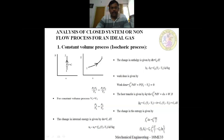At state point 1, we heat the gas and as a result the pressure increases. In the TS diagram, the temperature also increases from state point 1 to state point 2, whereas volume remains constant. We write P1V1/T1 = P2V2/T2, which is derived from the ideal gas equation PV = MRT.